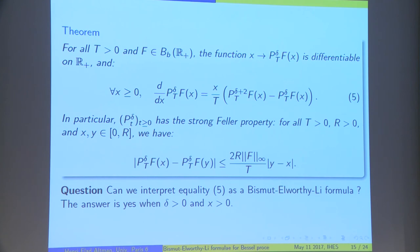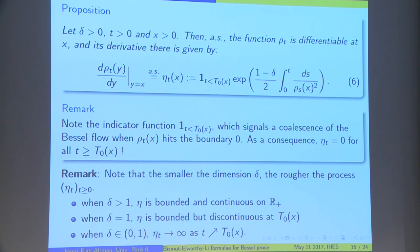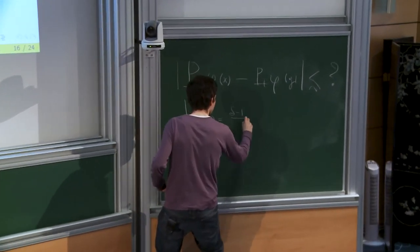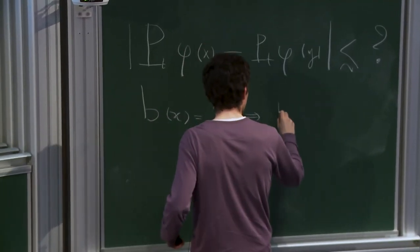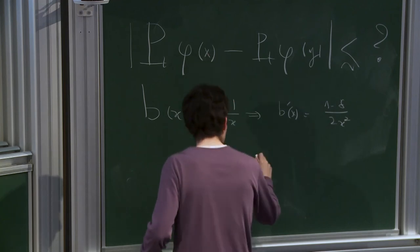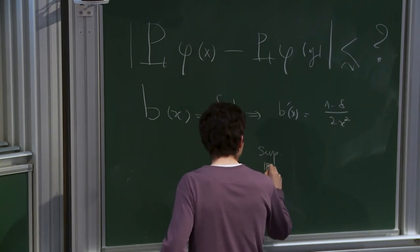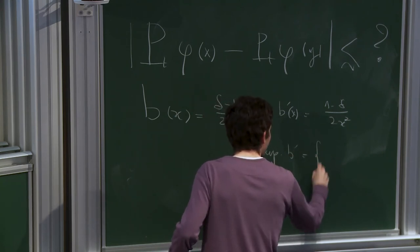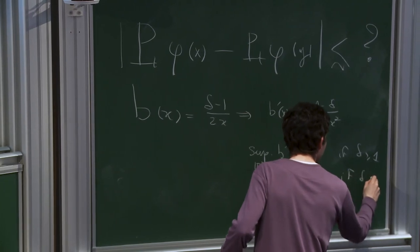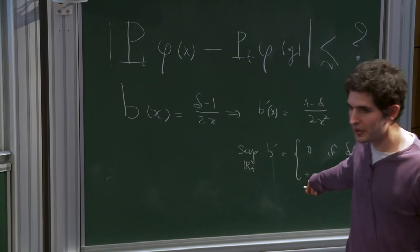The answer is yes, but it's really not easy to see. Why? Because, as I said, we don't have dissipativity when δ is smaller than 1. For example, if we compute the derivative of the solution with respect to initial condition, η_t here. Remember, here the drift, what I call B, is given by δ minus 1 over 2x. So, the derivative is given by 1 minus δ over 2x². You see that the supremum over ℝ+ star of B prime, it's 0 if δ is bigger than 1, but it's plus infinity if δ is smaller than 1.